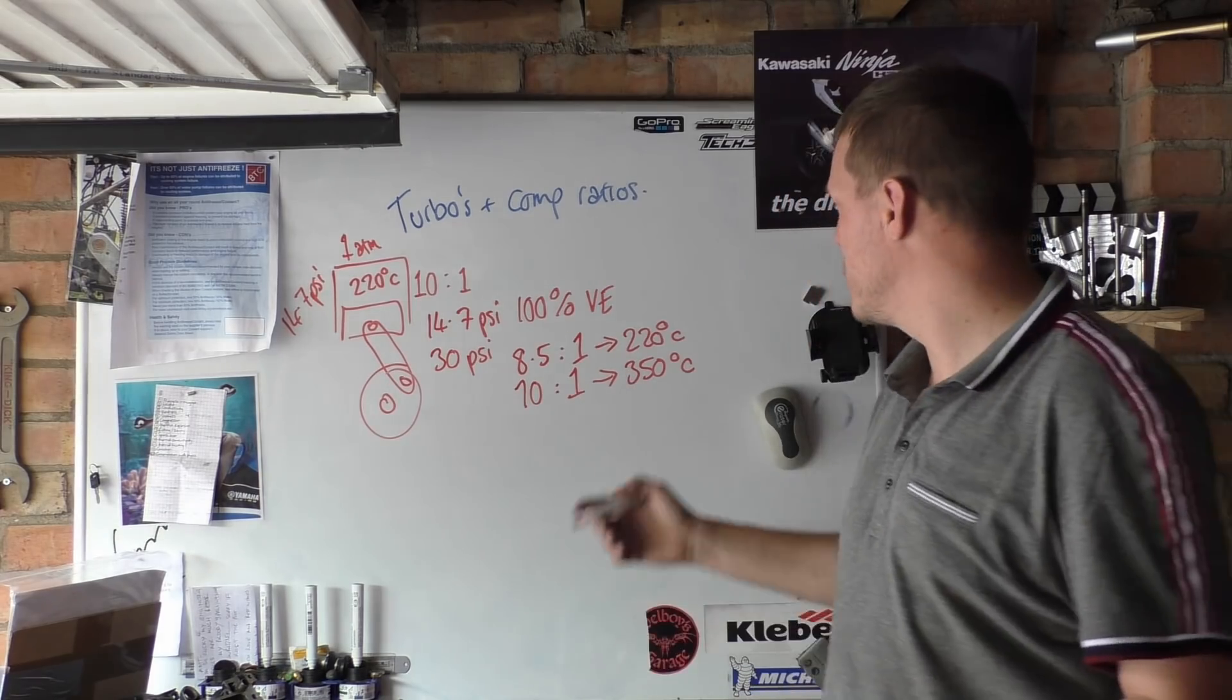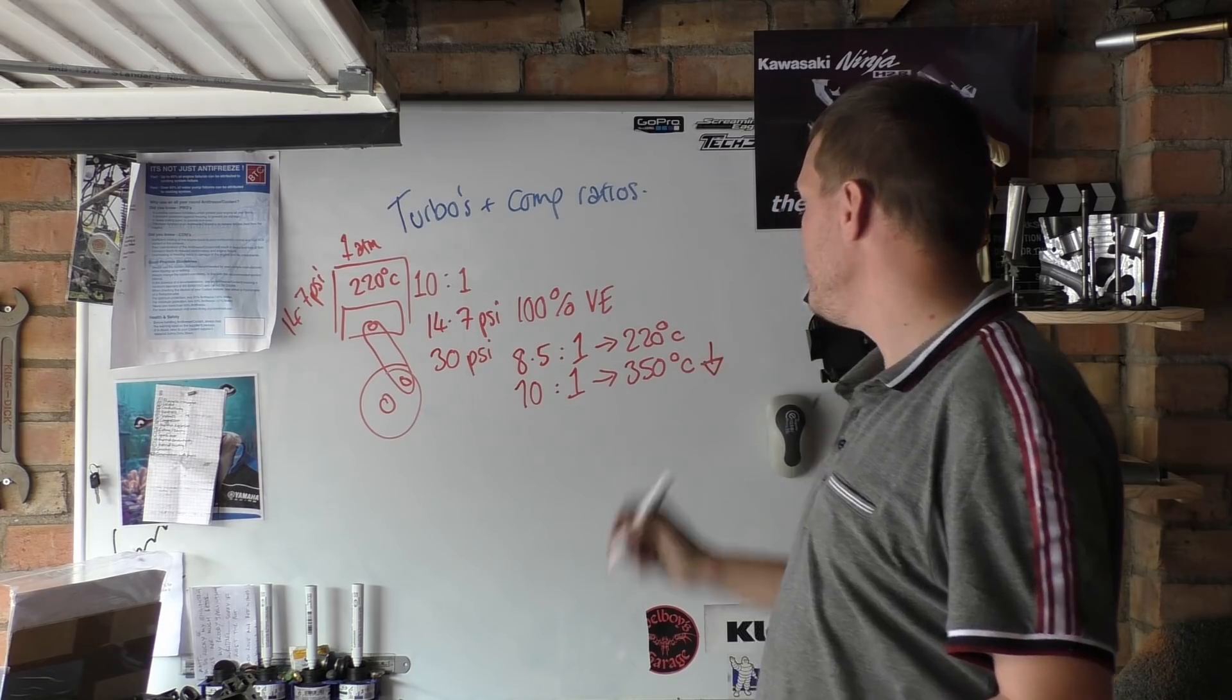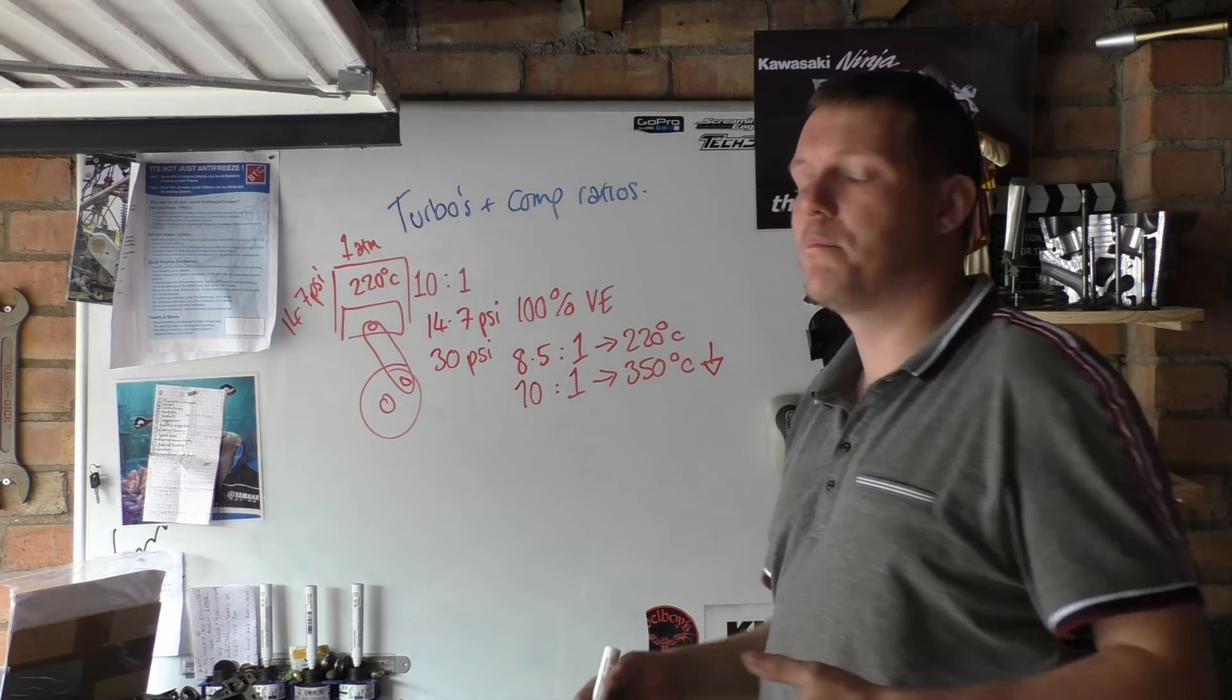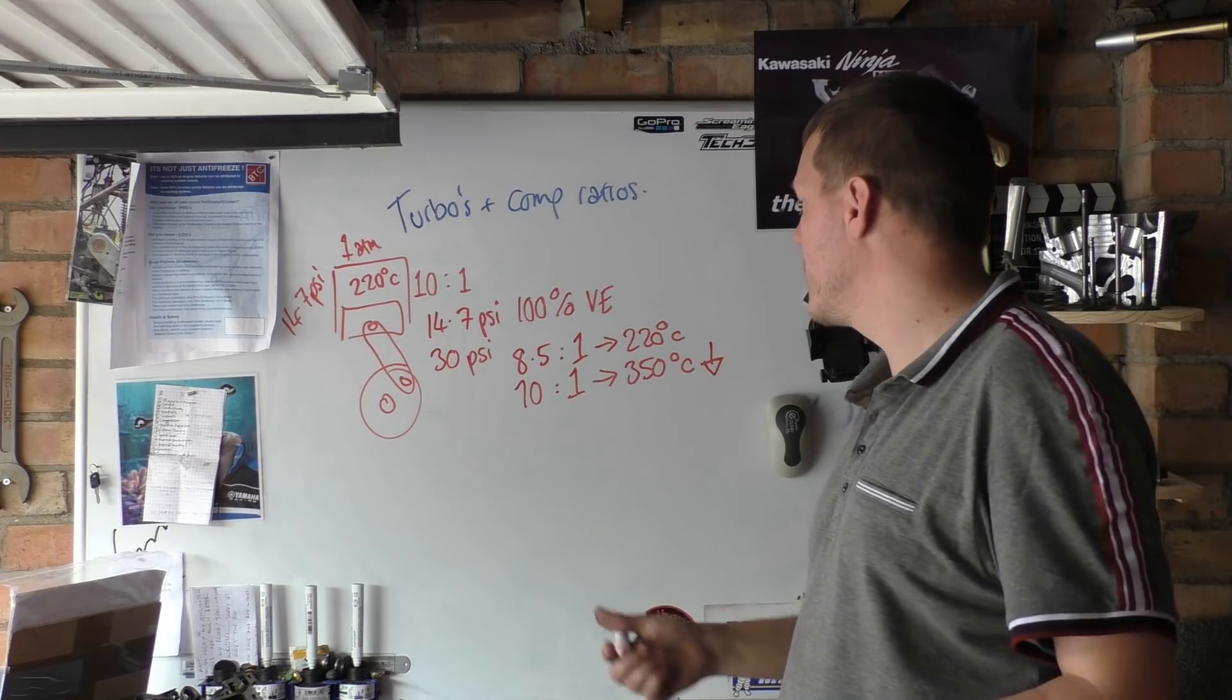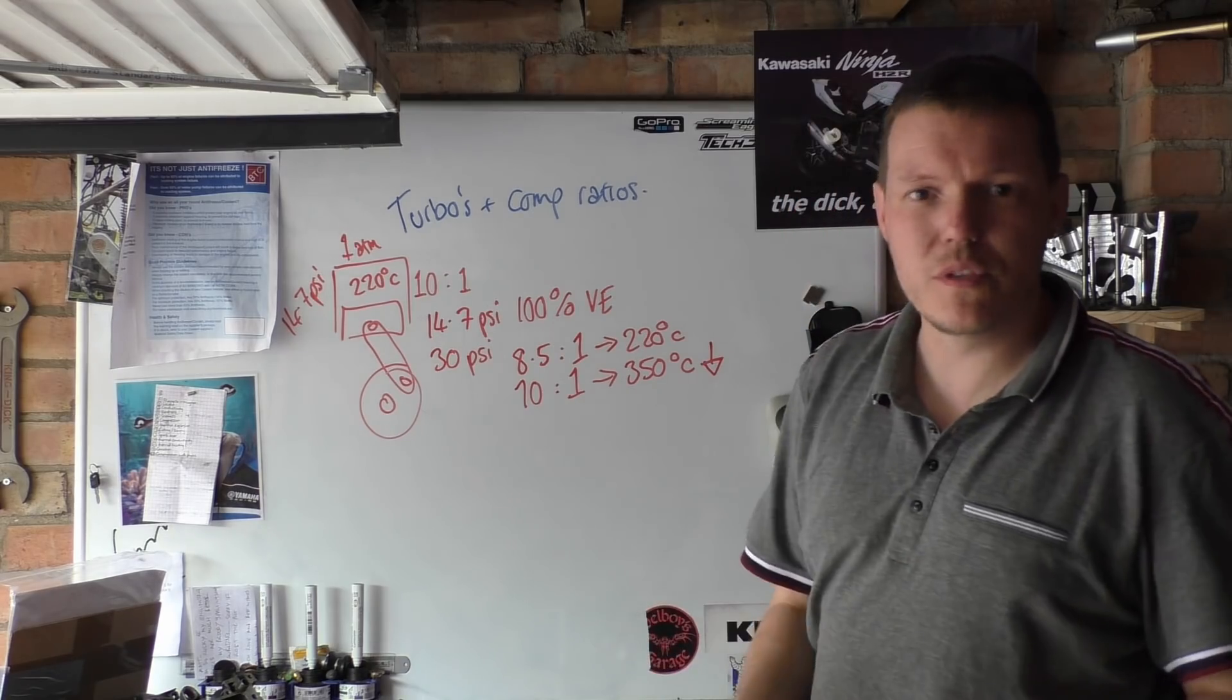So obviously because we've done this, we want to bring it back down to our 220 before pre-ignition and detonation starts to occur. Hence we need to reduce our compression ratio.